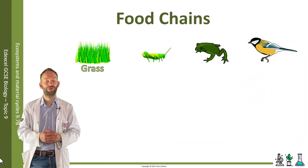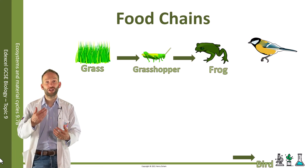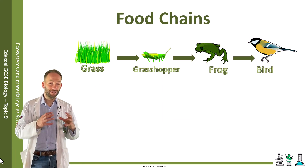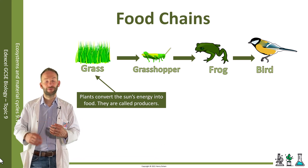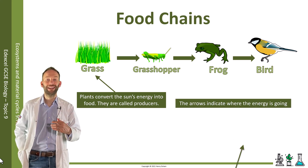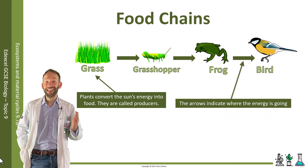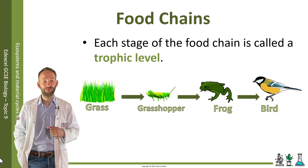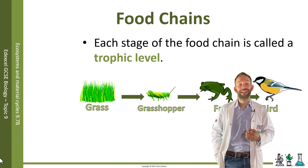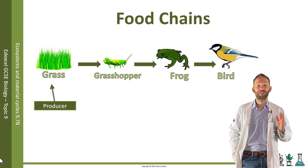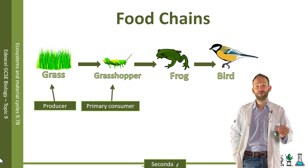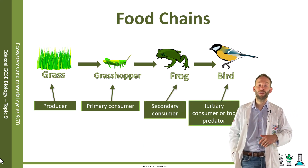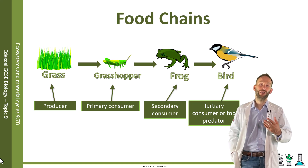Here's an example of a simple food chain: grass, grasshopper, frog, and bird. The plants convert the sun's energy into food, so they are called the producers. The arrows in a food chain indicate where the energy is going. Each level of a food chain is called a trophic level — this food chain has four trophic levels. We give each level a name: the plant is the producer, then we have the primary consumer, the secondary consumer, and the tertiary consumer, or top predator.